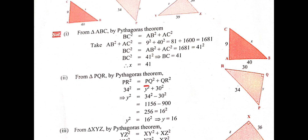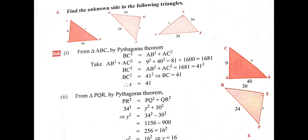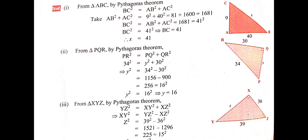From triangle PQR, PR = 34 is the hypotenuse, so PR² = PQ² + QR². Then 34² = y² + 30², giving y² = 34² − 30² = 1156 − 900 = 256. Taking the square root, y = 16.